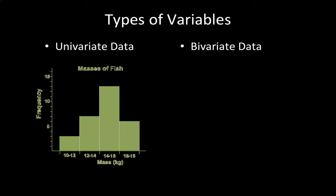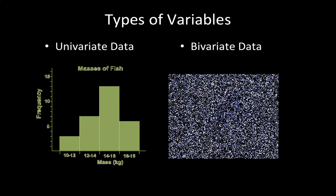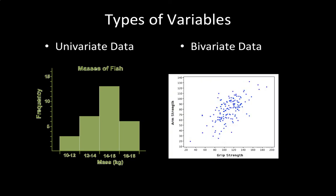Bivariate data is when you have two measurements on each subject or object, such as this graph, where we compare grip strength to arm strength for the same person.